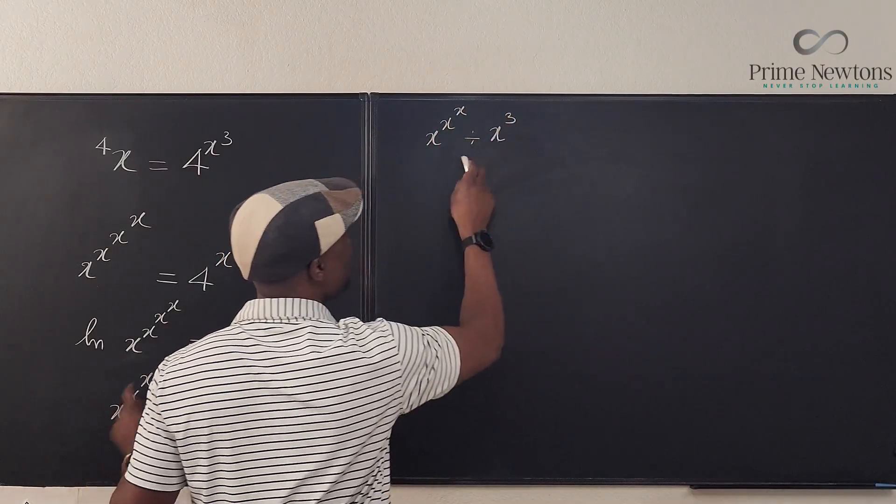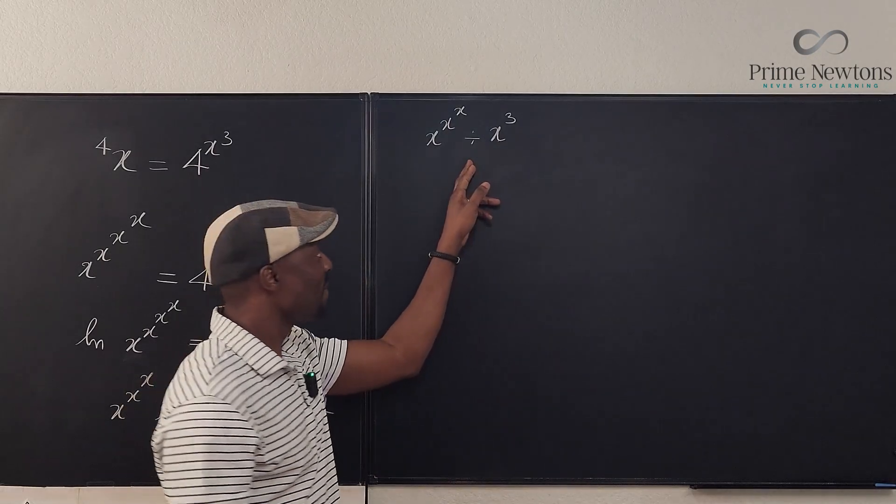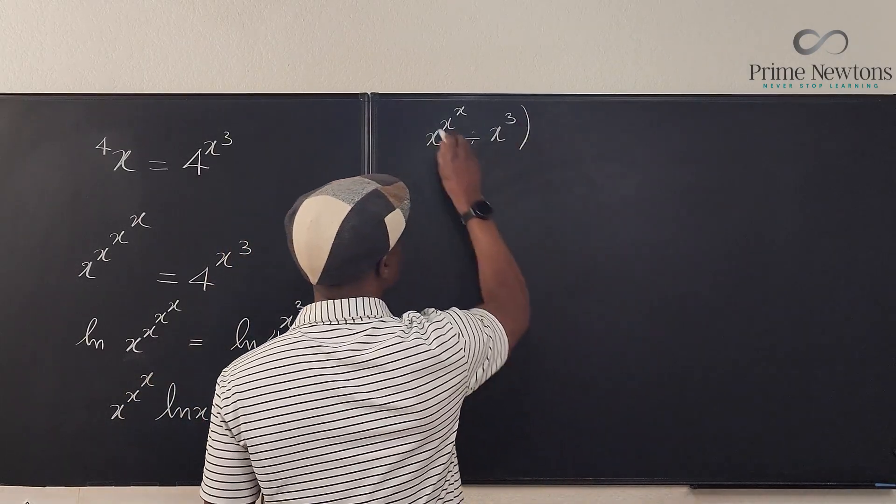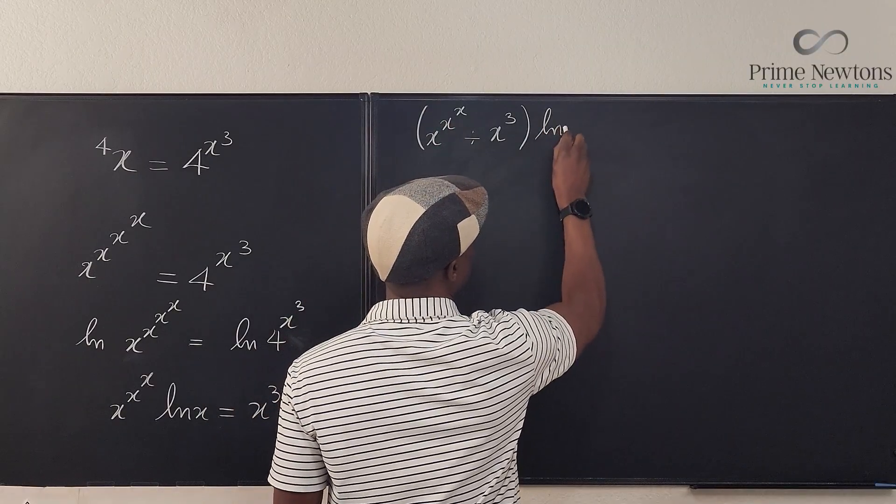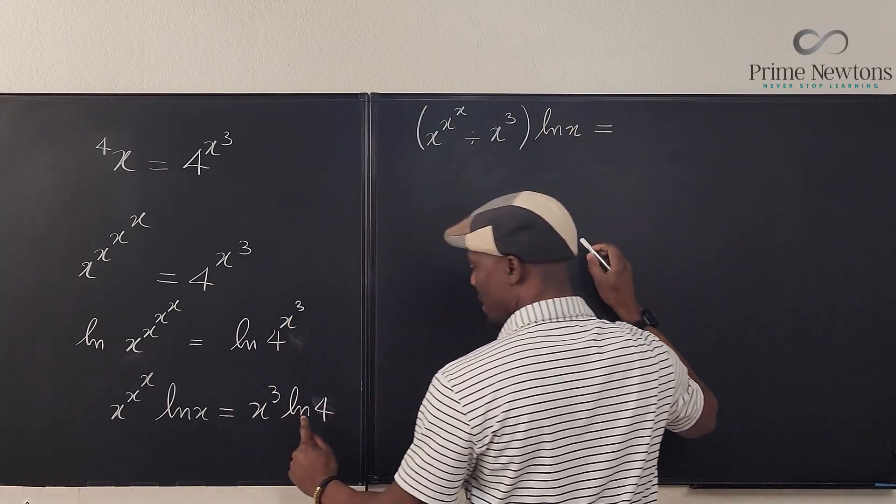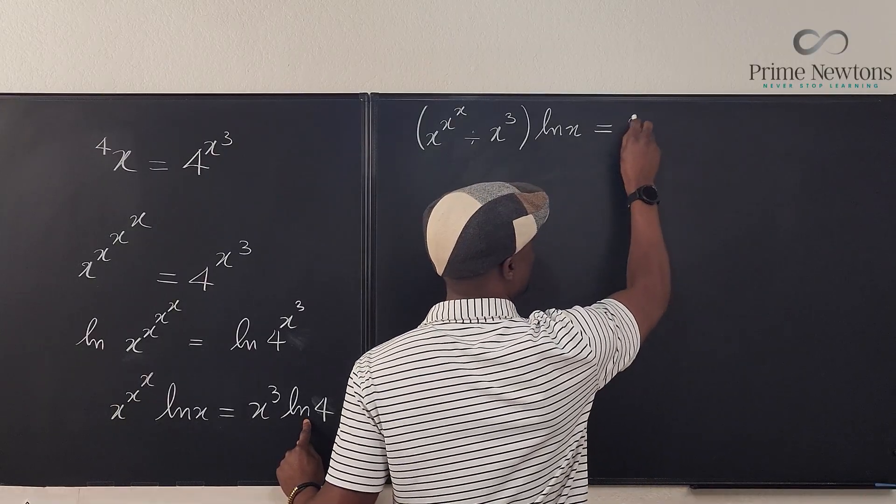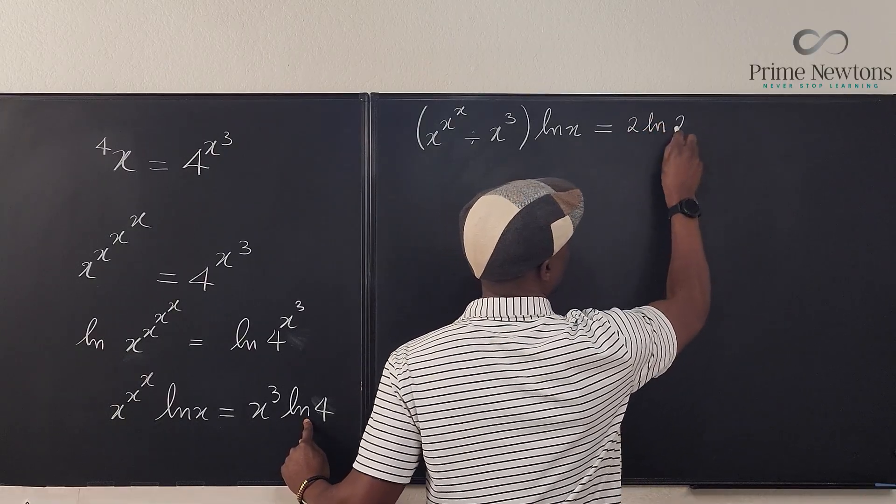Okay, so watch what's gonna happen. I'm gonna have x to the x to the x divided by x to the third. I'm using this sign because I want to show you something now. And I'm gonna have ln of x remaining, I still have ln of x. And on the right hand side I have just ln 4, but I'm gonna write my ln 4 as ln 2 squared, which is 2 ln 2.